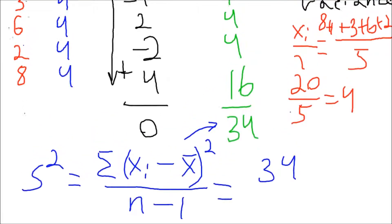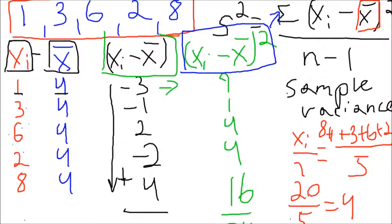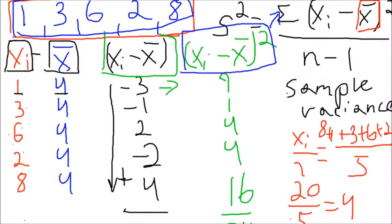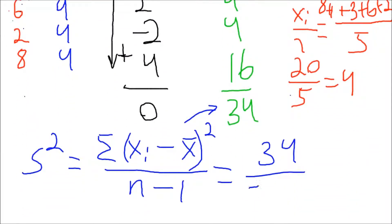And the n, which was the number of terms here, we can see that we have exactly 5 terms. So, we can put that here for n. 5 minus 1. And we get 34 divided by 4.